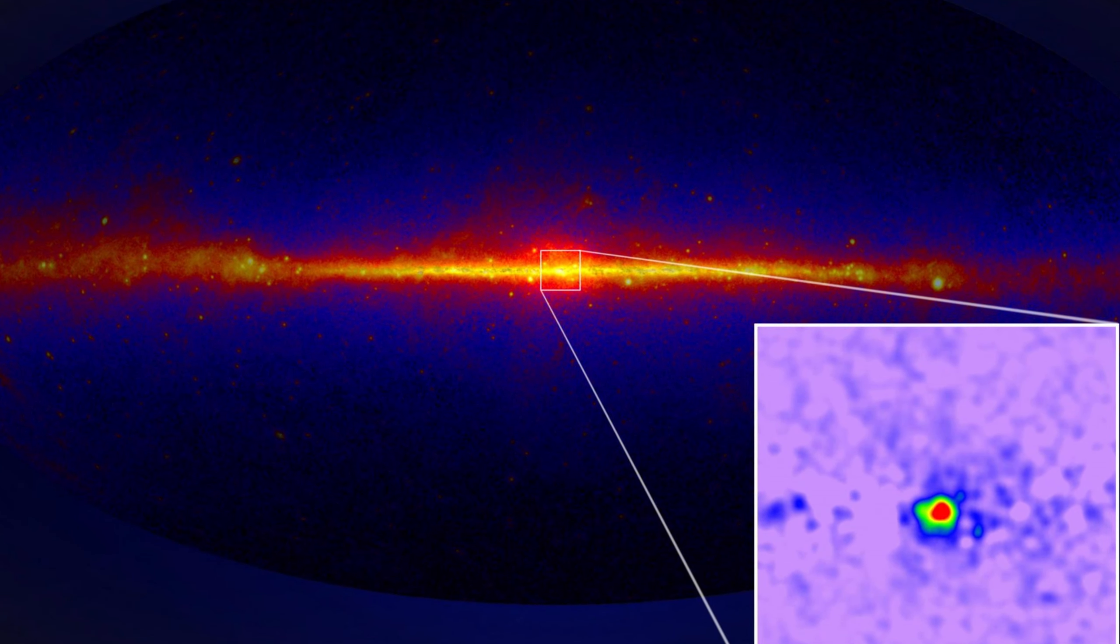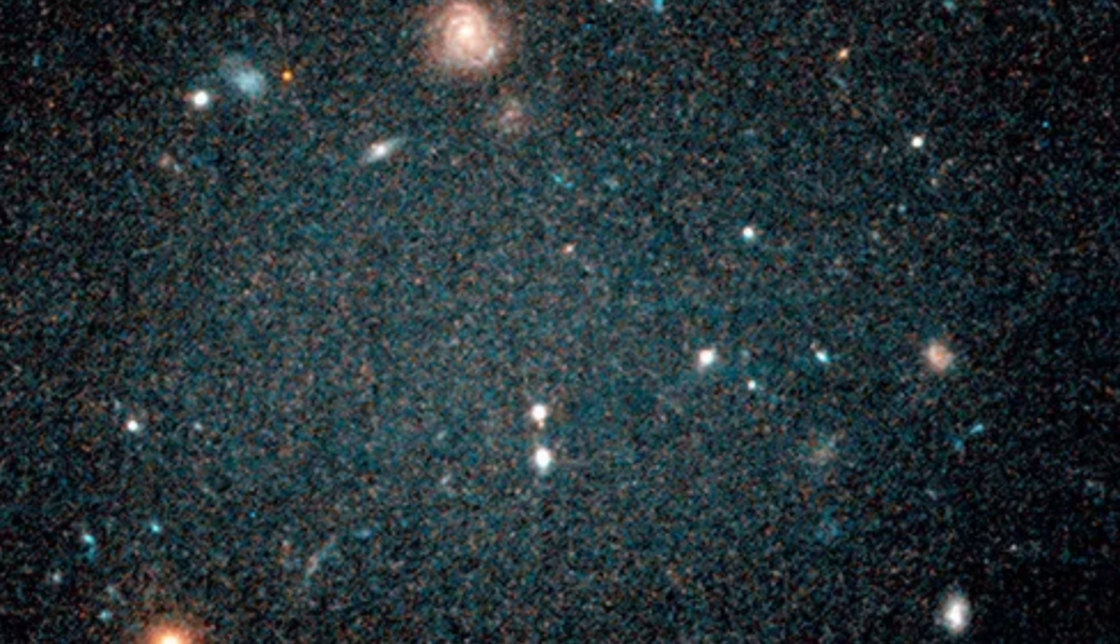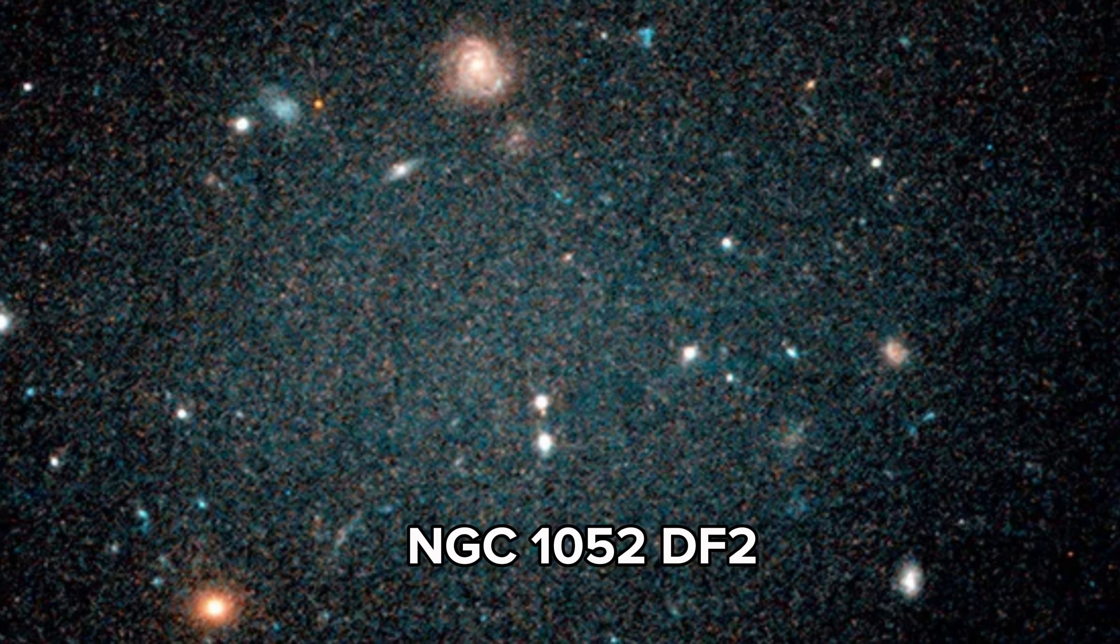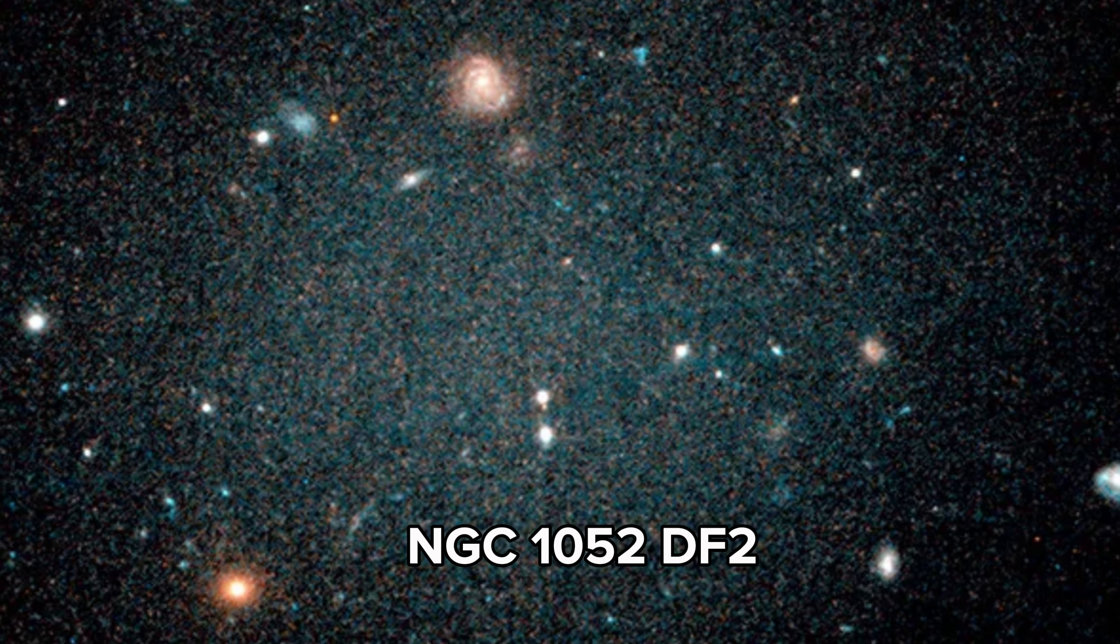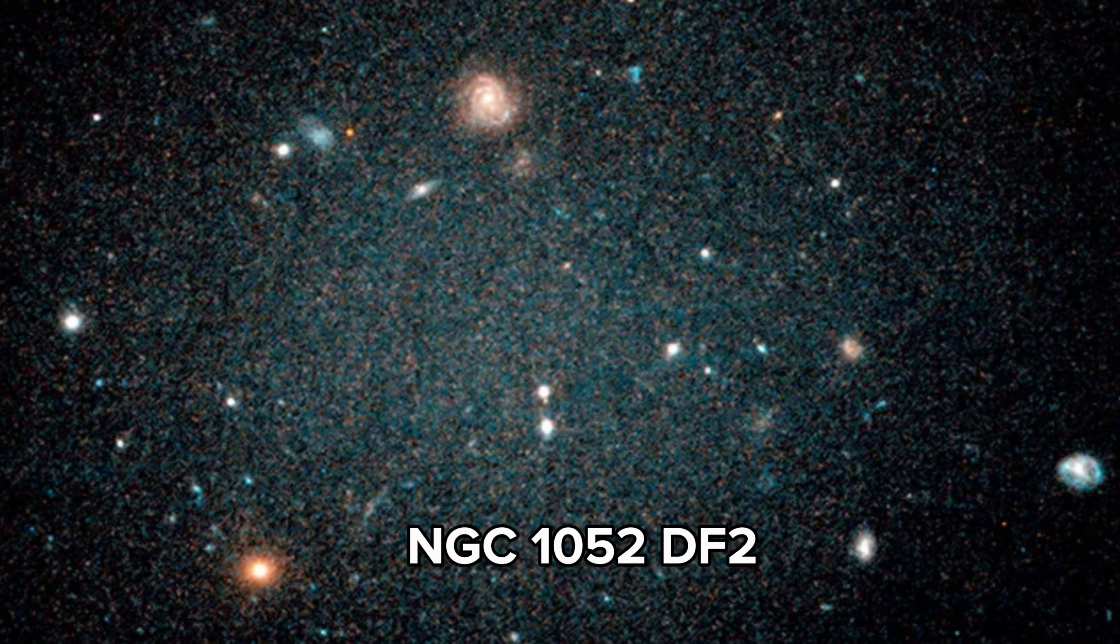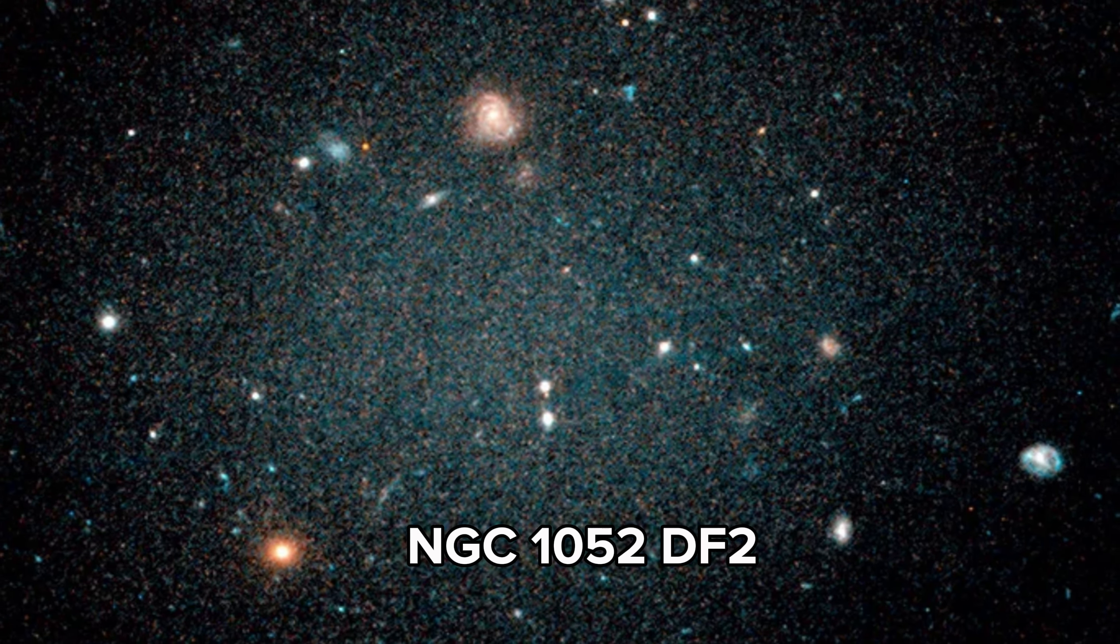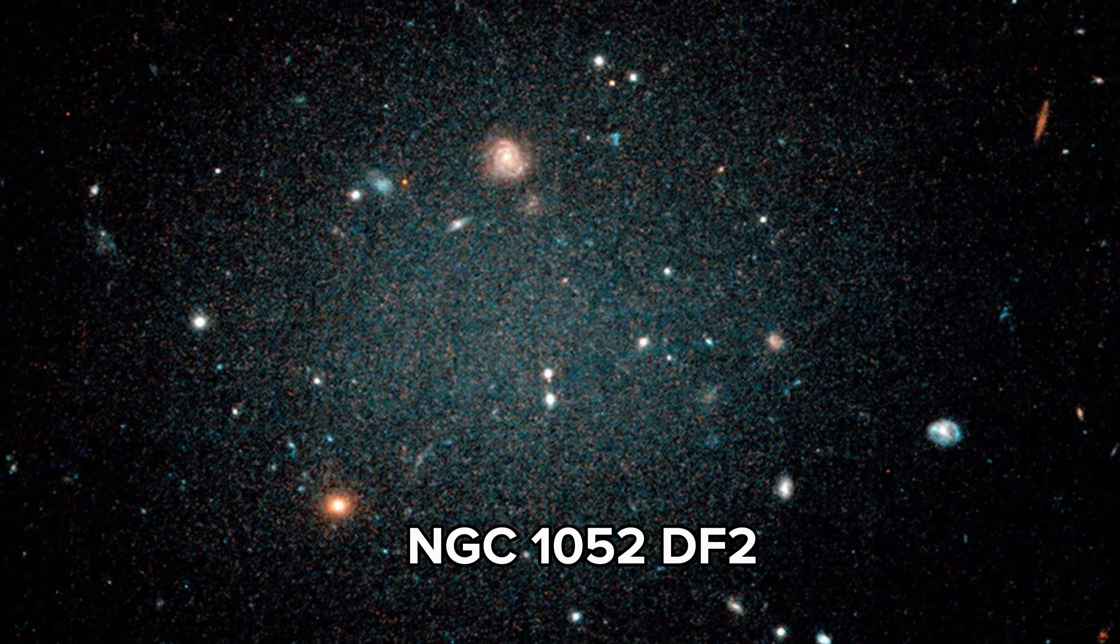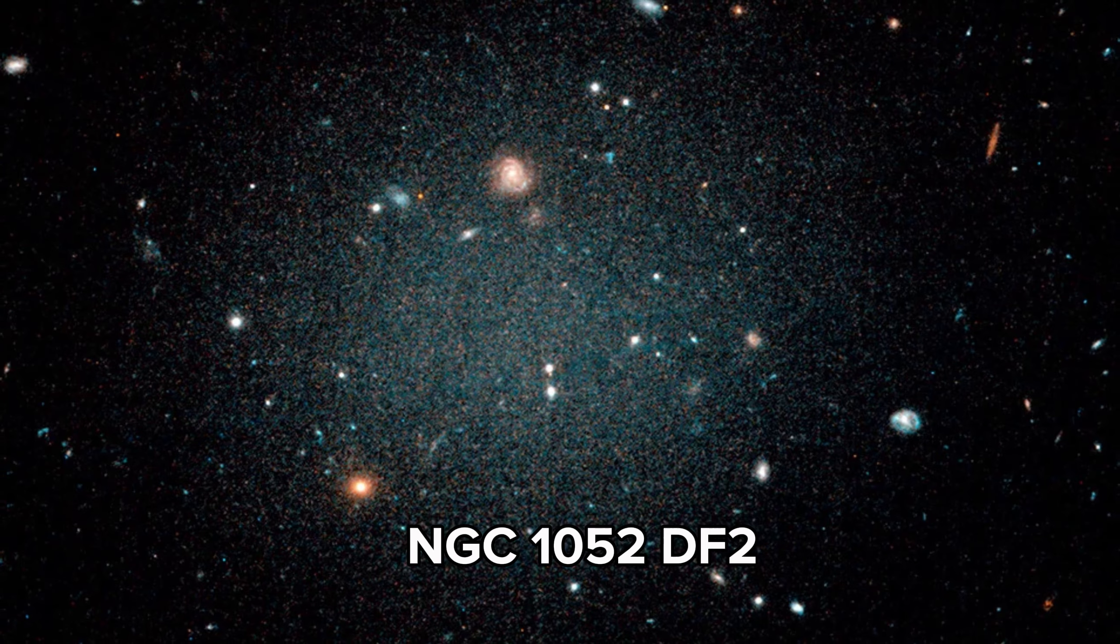However, scientists were shocked when they discovered a galaxy that contains no dark matter at all. We're talking about the galaxy NGC 1052-DF2, located in the constellation of Cetus. The almost complete absence of dark matter in a galaxy was a real surprise because scientists had previously believed that galaxies cannot form without this mysterious substance.